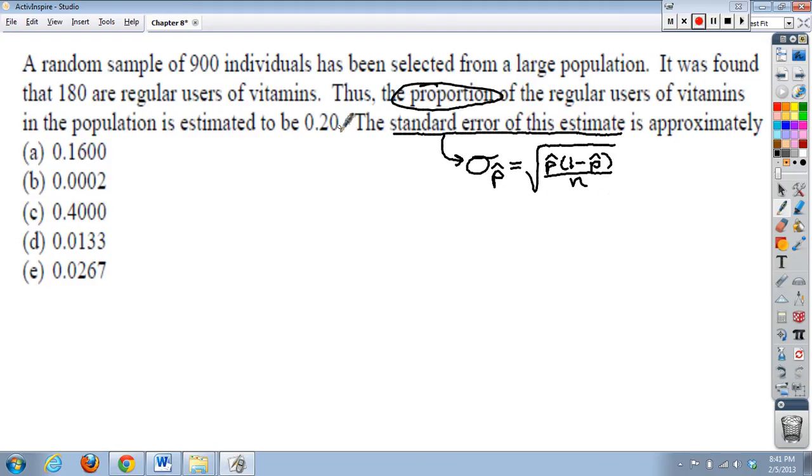Now, my sample size are my 900 individuals here, so this is n. Now, the 180 is not my p-hat, the p-hat is the 180 out of 900, which was given as this value, basically 2 tenths. So when I figure this out, I can go ahead and use 0.2, 0.20,